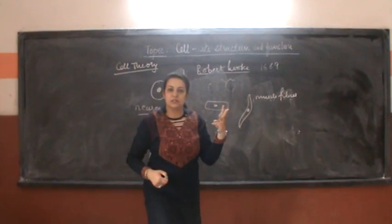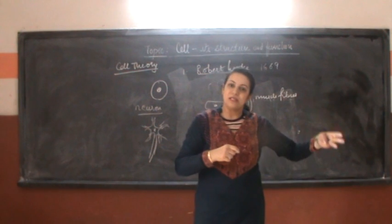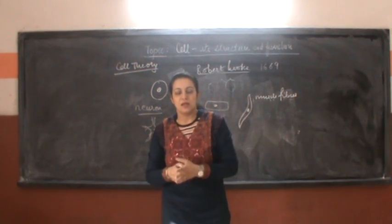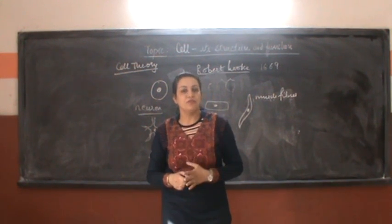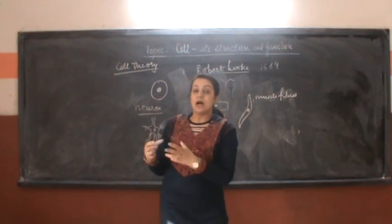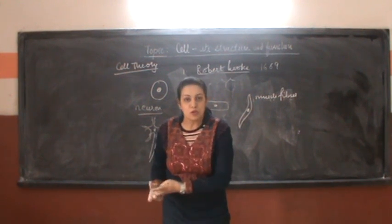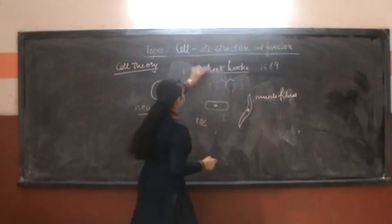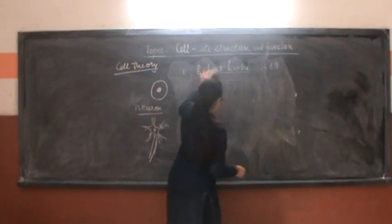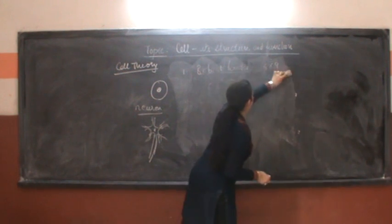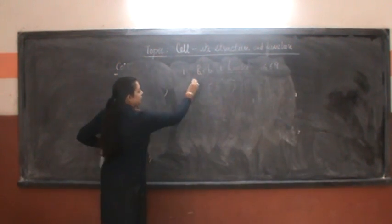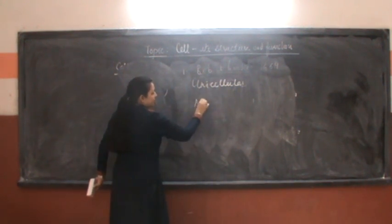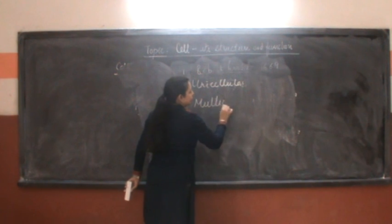The third postulate of the cell theory was that all new cells come from the division of old cells. That was a revolutionary idea in terms of the cell, because people now started to know what they are composed of, what their bodies are made up of. Taking to the next topic, there are two types of organisms in their structure: unicellular organisms and multicellular organisms.